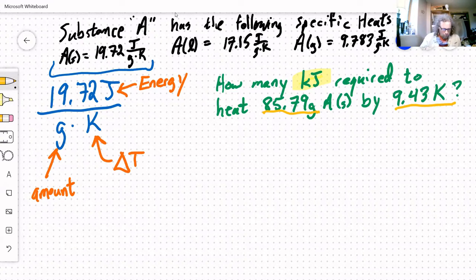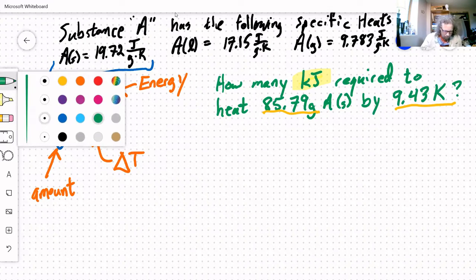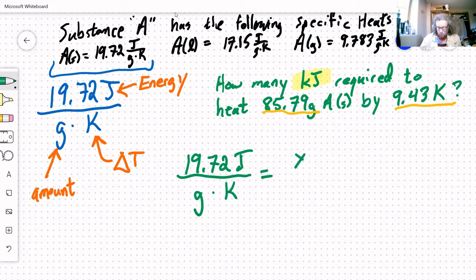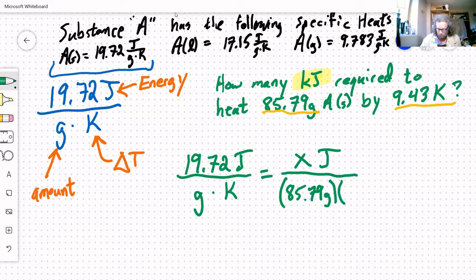So I can put this all together. Let me just write it out. 19.72 joules per gram Kelvin is equal to, well, joules is what I'm looking for, that many joules times how many grams do I have, 85.79 grams, and my delta T is 9.43 Kelvin. So now all I have to do is solve for x. That takes a little bit of algebra, but really that's how we set the problem up. I just set it up by looking at the units and looking at the values that I was given.